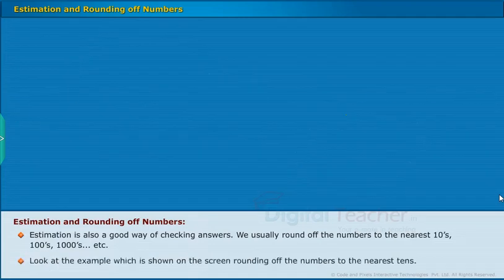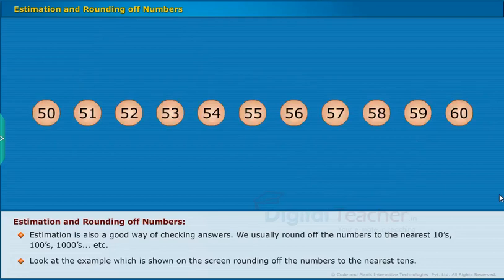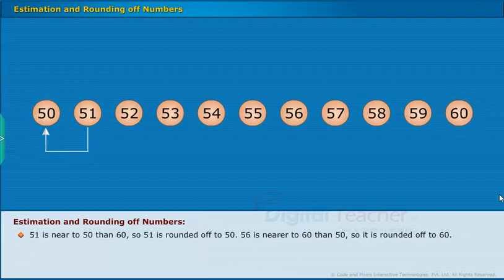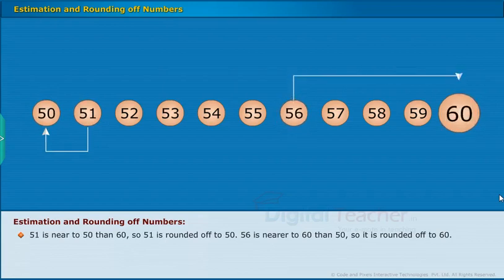Look at the example which is shown on the screen, rounding off the numbers to the nearest tens. 51 is near to 50 than 60, so 51 is rounded off to 50. 56 is nearer to 60 than 50, so it is rounded off to 60.